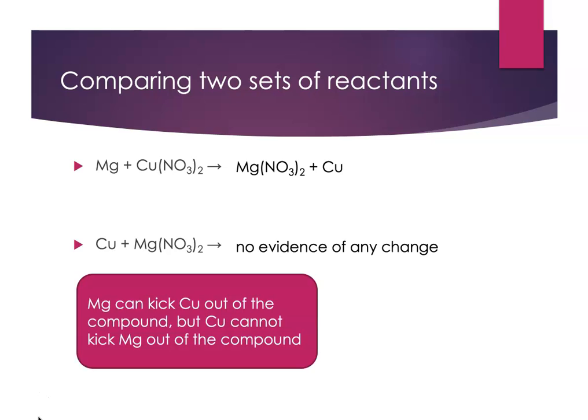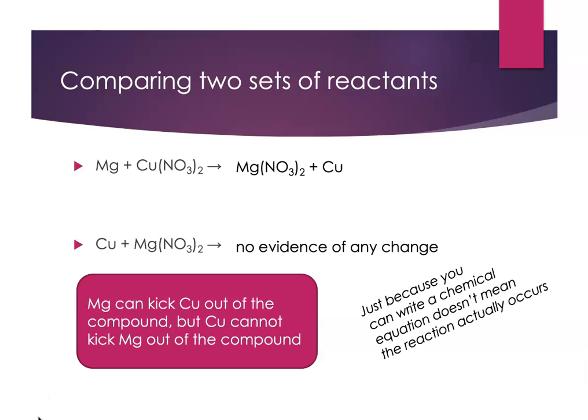Here's what this tells us. Magnesium can kick copper out of the compound, but copper can't kick magnesium out of the compound. Magnesium is more reactive than copper. The other thing I want to point out is just because you can write a balanced equation doesn't mean the reaction actually takes place in real life.